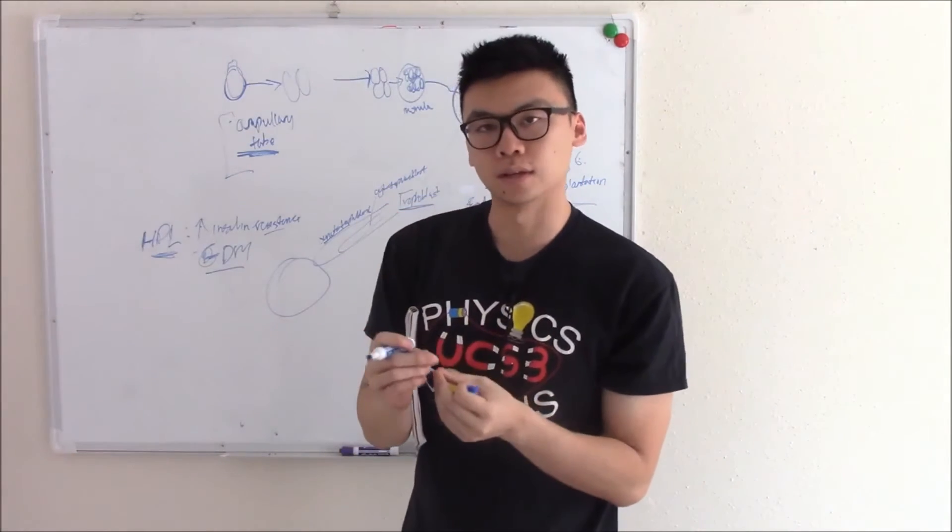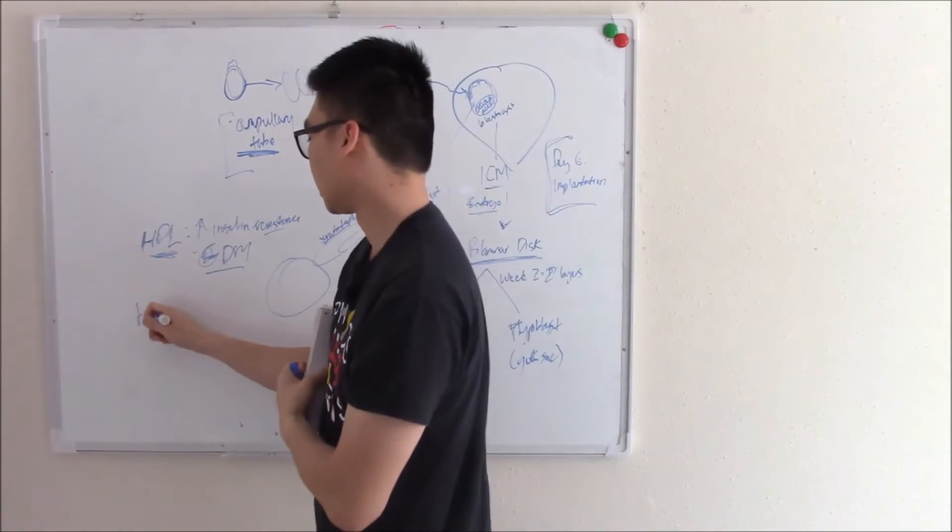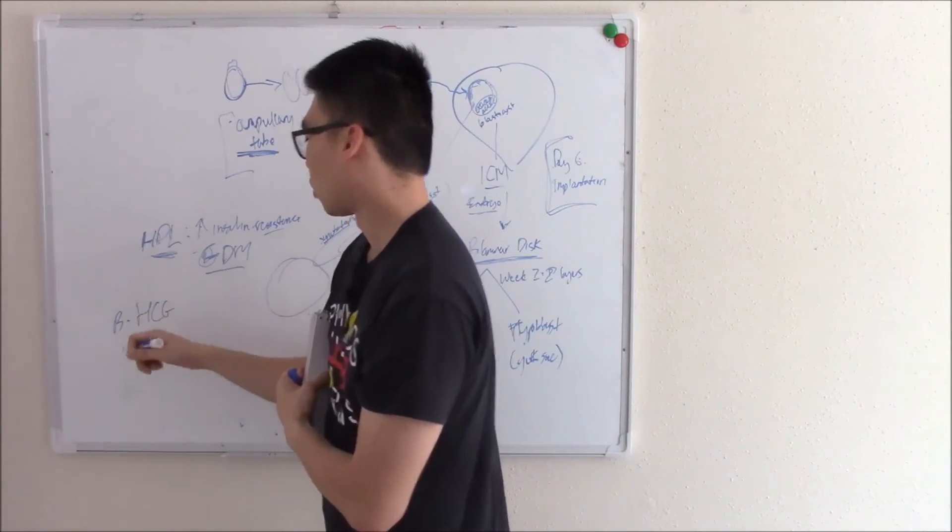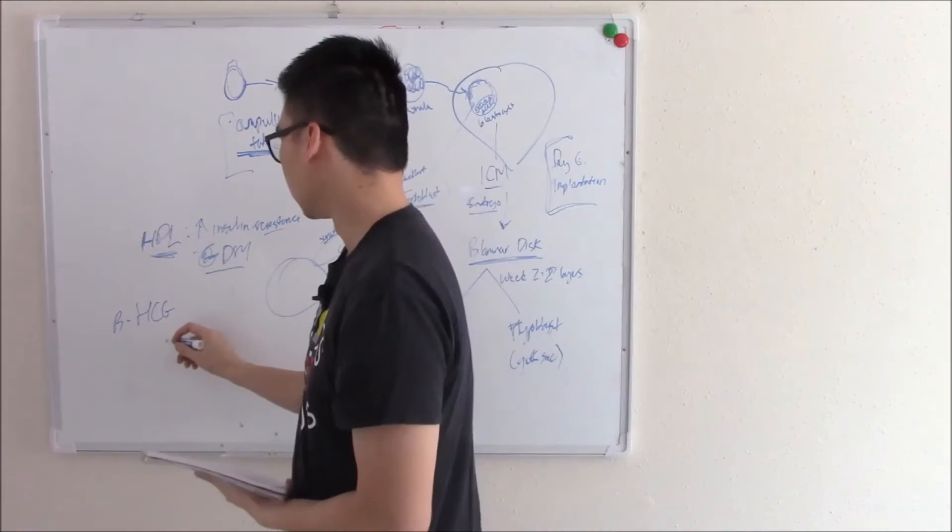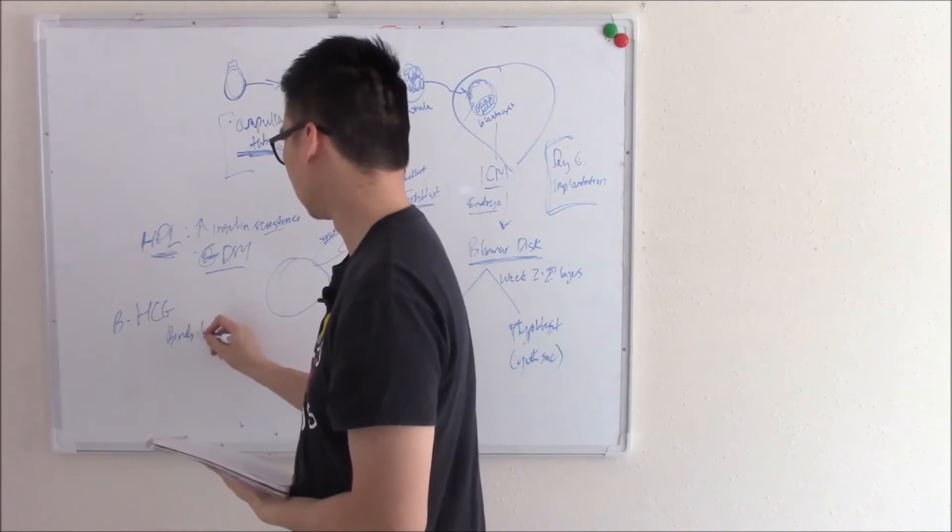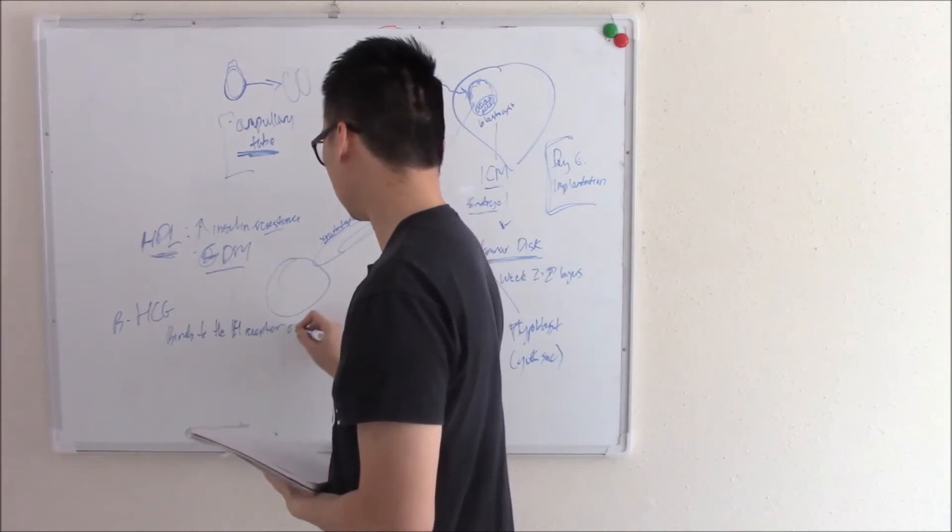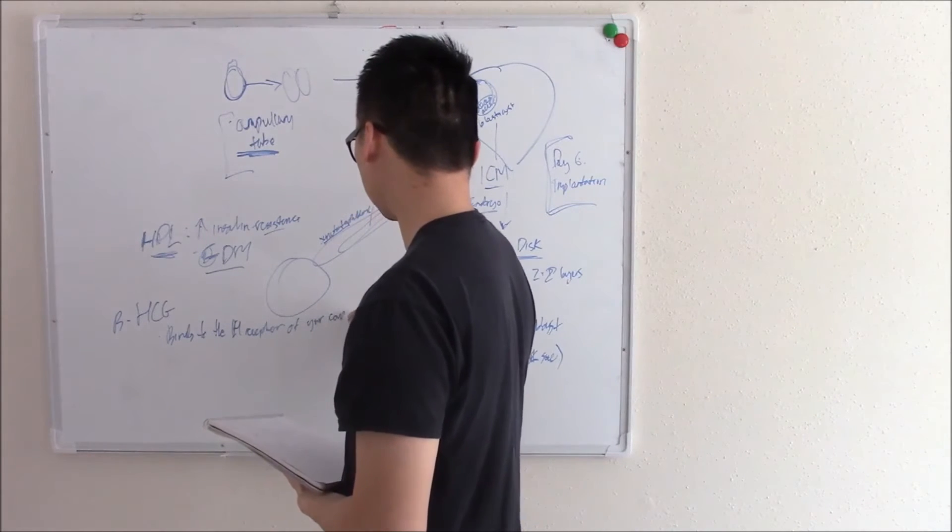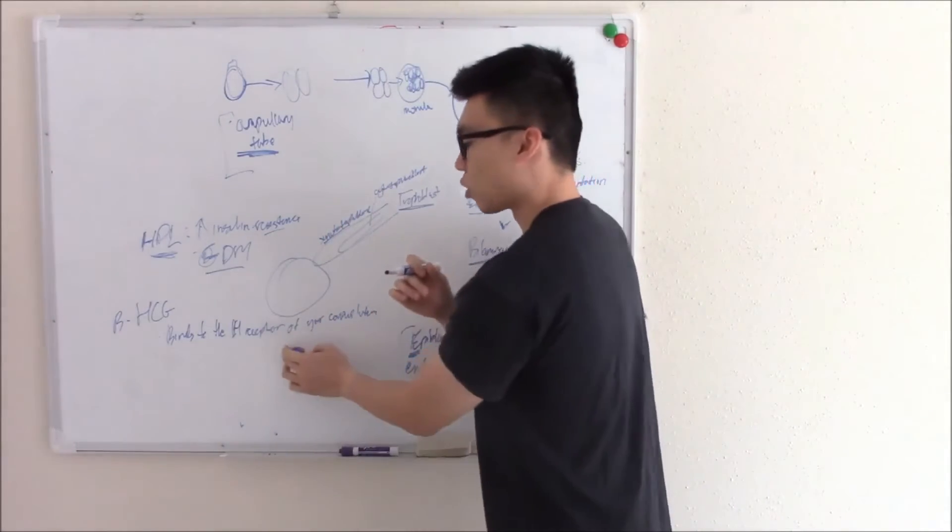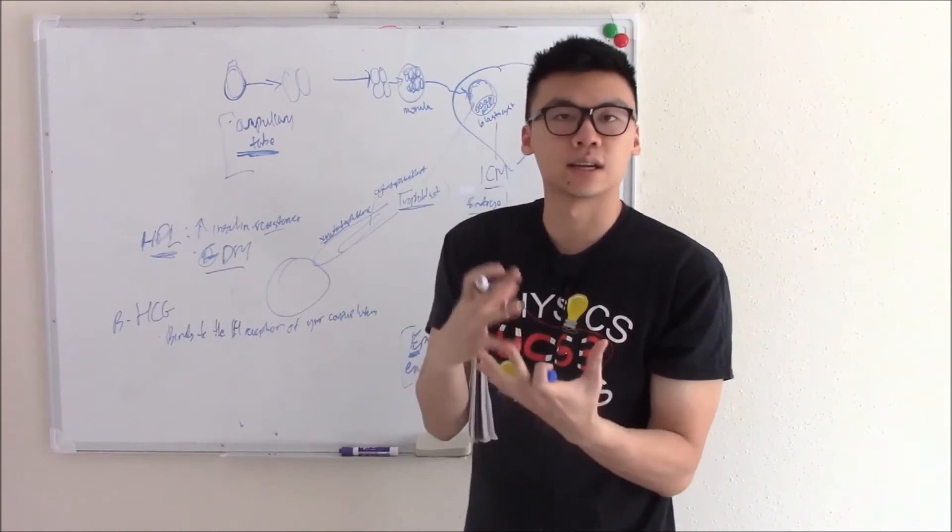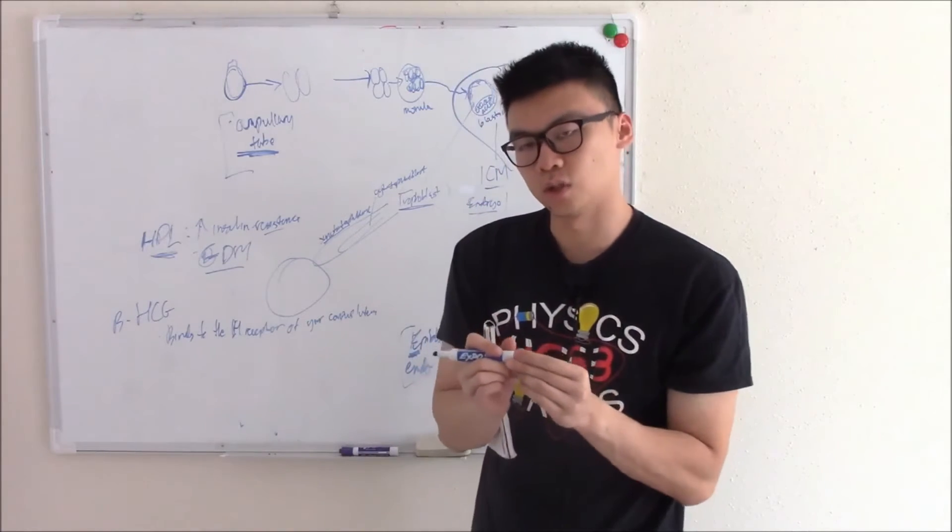So that's human placental lactogen. But maybe the most common or the most well-known hormone that your syncytial trophoblast can produce is beta-HCG, or human chorionic gonadotropin. And what that does is that it binds to the LH receptor of your corpus luteum. It tells it not to degenerate just yet. We still need the corpus luteum to produce progesterone to maintain the endometrial lining for us to grow and for us to thrive. Tell the corpus luteum we still need you, don't go just yet.